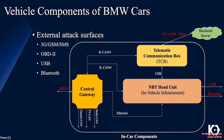The following illustrates some components of connected BMW cars and their respective attack surfaces. The telematics communication box interacts with an external actor via 3G, GSM, or SMS protocol. The NBT head unit interacts with an external actor via USB or Bluetooth, and the central gateway interacts with an external actor via the OBD2 interface. This particular vulnerability concerns the telematics communication box, reachable via the 3G, GSM, or SMS protocol.